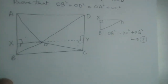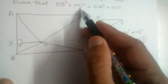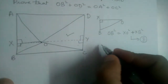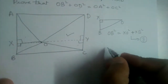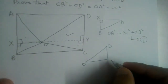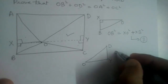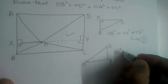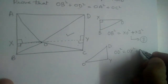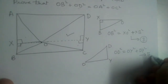Now we need OD². So let us take the right angle triangle ODY and apply Pythagorean theorem. OD² = OY² + DY². Let this be equation two.